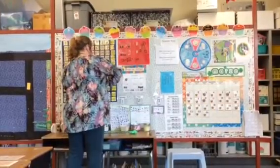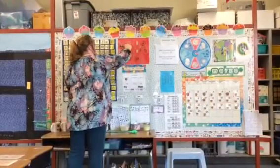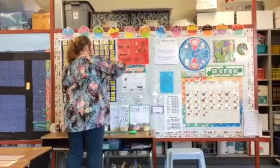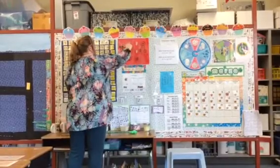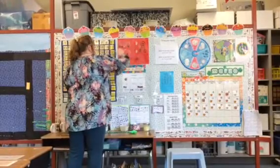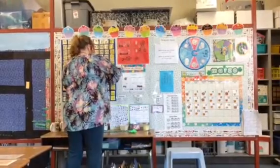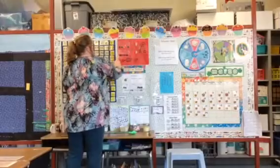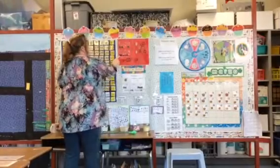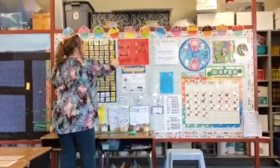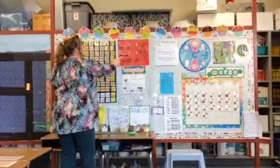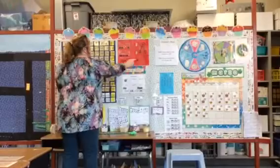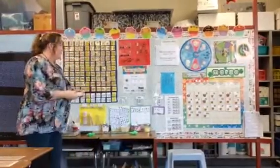We'll double check by adding our counters too. So we have — eight, nine, 10. Let's see, do I have seven? One, two, three, four, five, six, seven. You solved the problem.